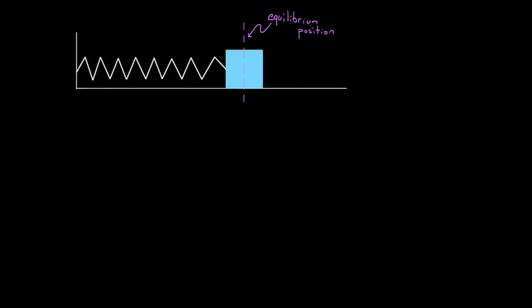So what would that look like? You'd have a graph of the horizontal position X, graphing it as a function of time. Now, you might wonder why we put the horizontal position on the vertical axis. Well, long ago, physicists decided that if time is involved, they're sticking that on the horizontal axis — it's just designated by default to go on the horizontal axis.